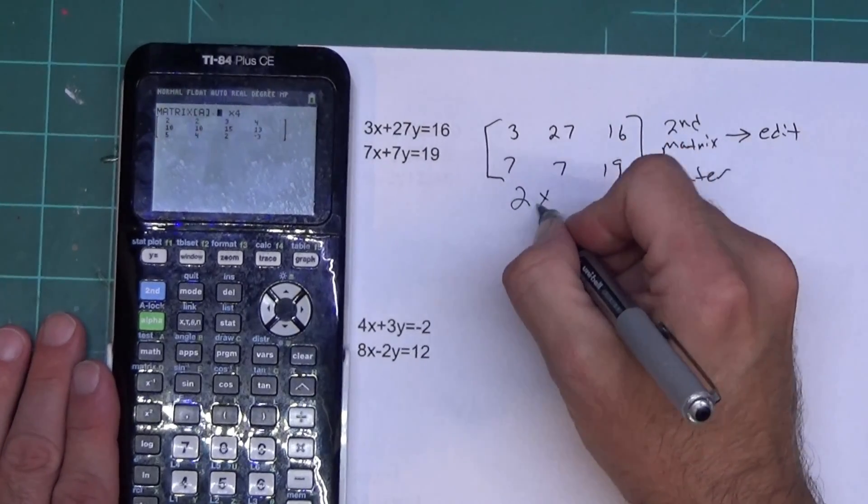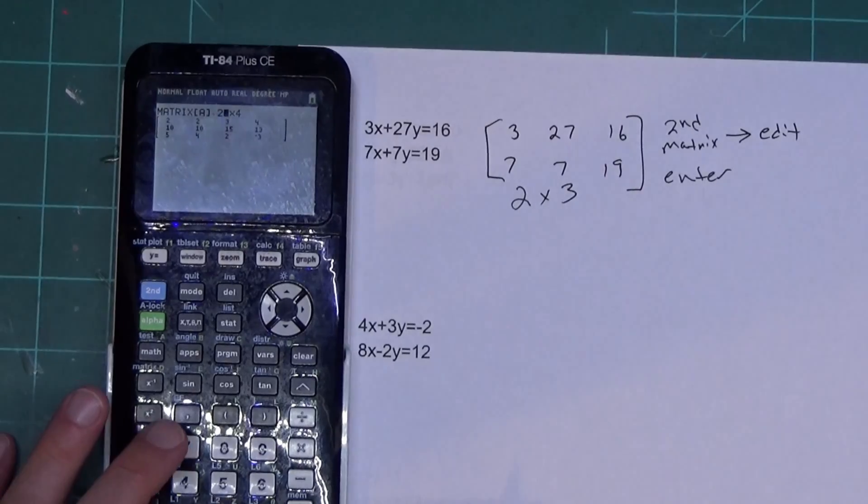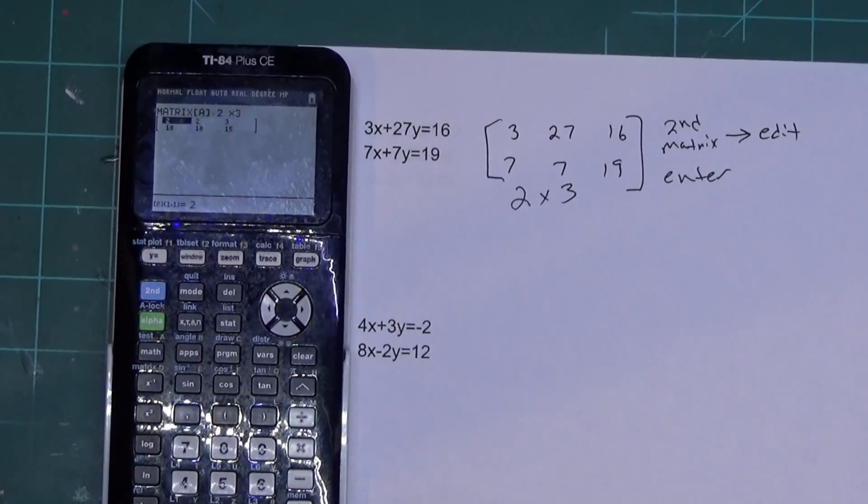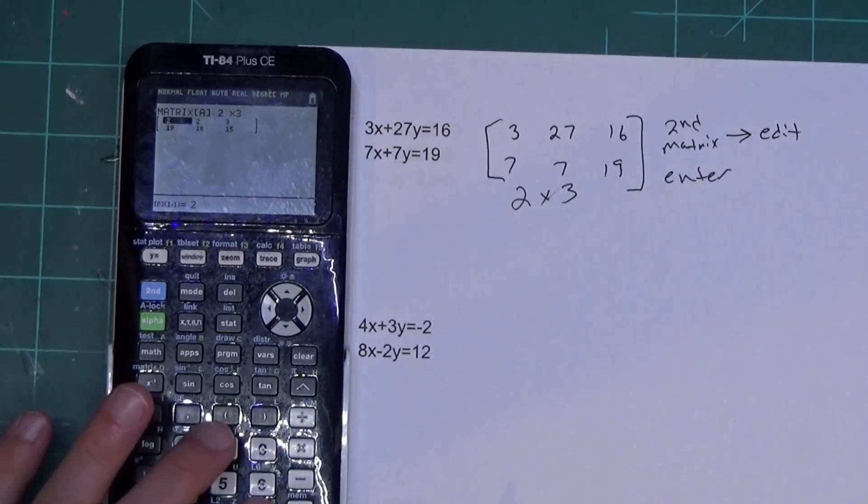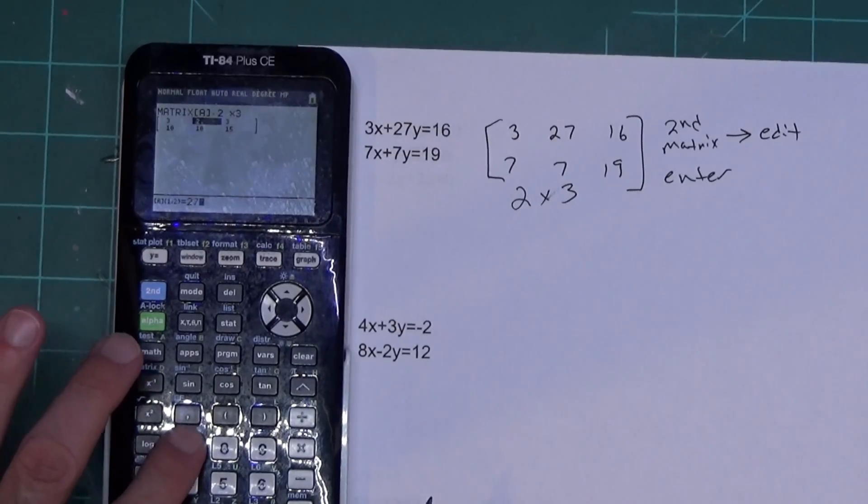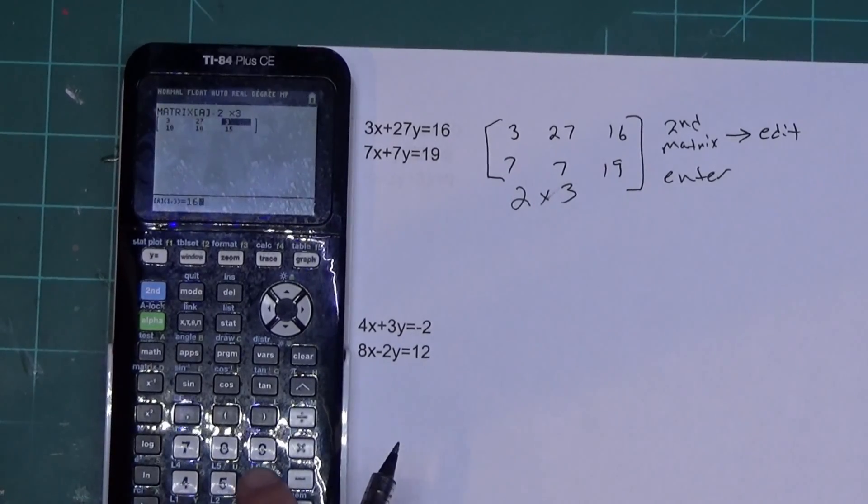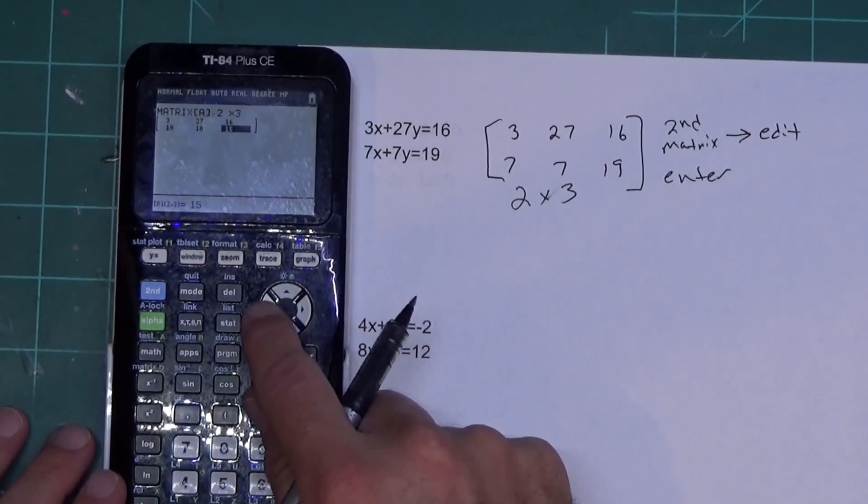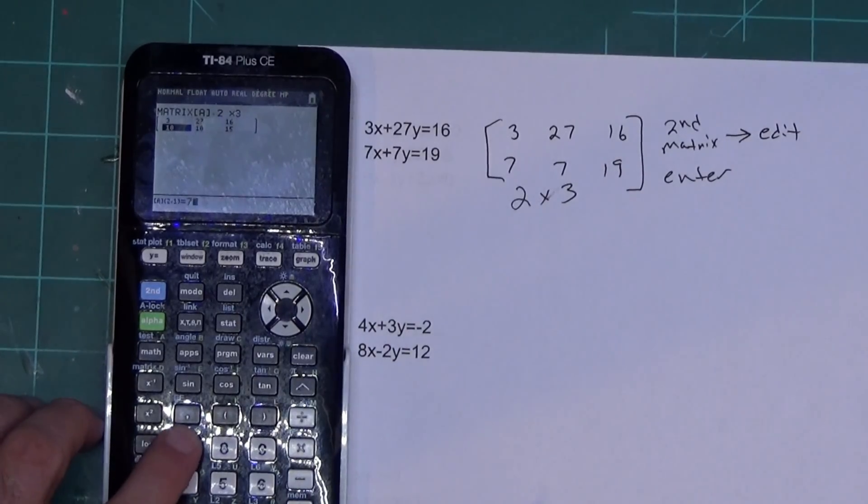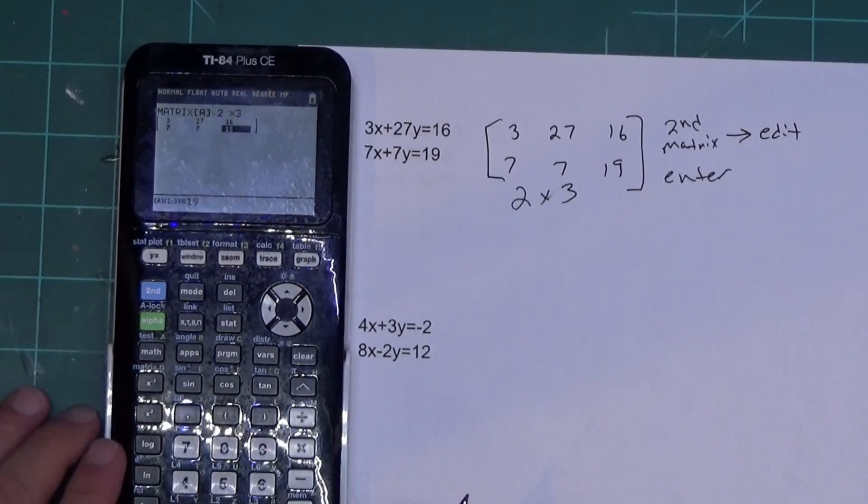Now this one has two rows and three columns, so we're going to tell it 2 enter, 3 enter. And you just type in what we have written here. So it'll be 3 enter, 27 enter, 16. Now if you don't want to press enter you can use the arrow buttons. 7 enter, 7 enter, 19 enter.